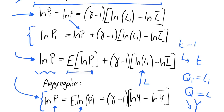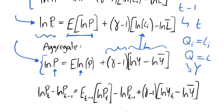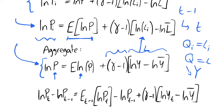Our aggregate Phillips curve relationship is that the natural log of the price level equals the expectations of the log of the price level plus a constant — the elasticity of labour minus one — multiplied by the output gap. But we're not quite done, because in a Phillips curve we look at inflation, not just the log of the price level. The trick is to subtract ln P_{t-1} from both sides of the equation.